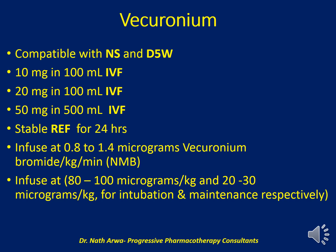Vecuronium is compatible with both 5% dextrose in water and normal saline. Dilute 10 mg in 100 ml, 20 mg in 100 ml, and 50 mg in 500 ml of preferred IV fluid. After dilution and homogenizing, such fluids are stable under refrigeration for 24 hours. Infuse at a rate of 0.8 to 1.4 mcg per kg per minute during neuromuscular blockade, or 80 to 100 mcg per kg for intubation and 20 to 30 mcg per kg for maintenance.